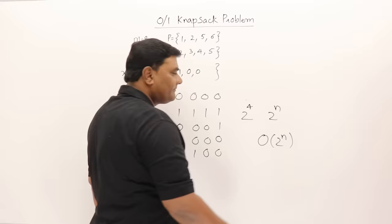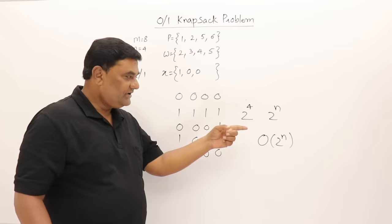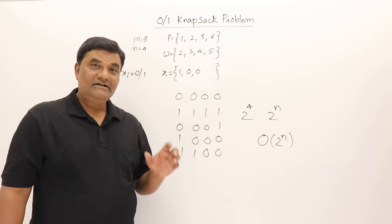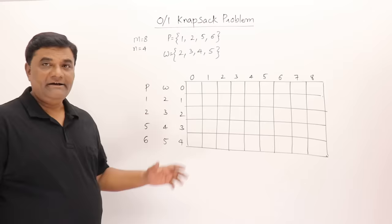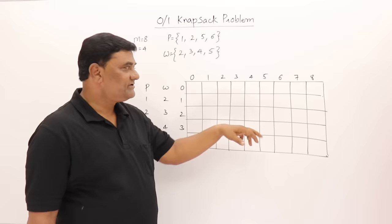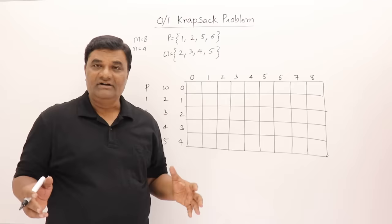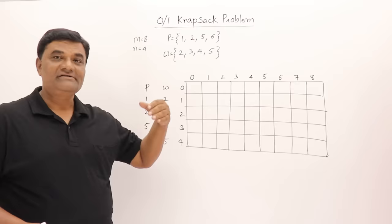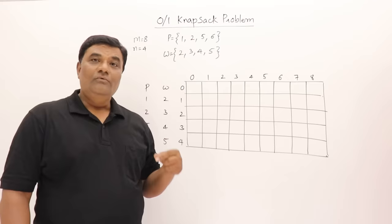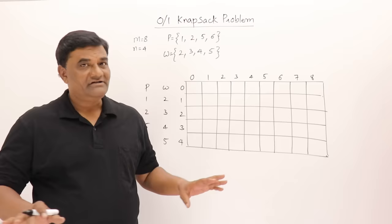Dynamic programming shows an easy method for doing the same thing — we will indirectly try all 2^n possibilities but not directly. Let us solve this using the tabulation method. Since the capacity of the bag is 8, I have taken columns from 0 to 8. Rows represent 4 objects, so I have taken 5 rows: 0, 1, 2, 3, 4. Initially we consider no object.